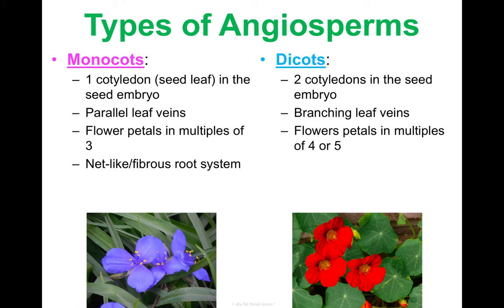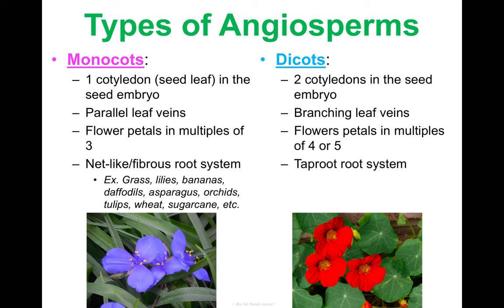Monocots have a net-like, fibrous root system — like those white fibrous roots spread throughout soil when you pull up plants from a garden tray. Dicots have a taproot system with one main central root that anchors the plant. Common monocots include grass, lilies, bananas, daffodils, asparagus, orchids, tulips, wheat, and sugarcane. Dicots include dandelions, daisies, apples, peaches, roses, tomatoes, carrots, and more.